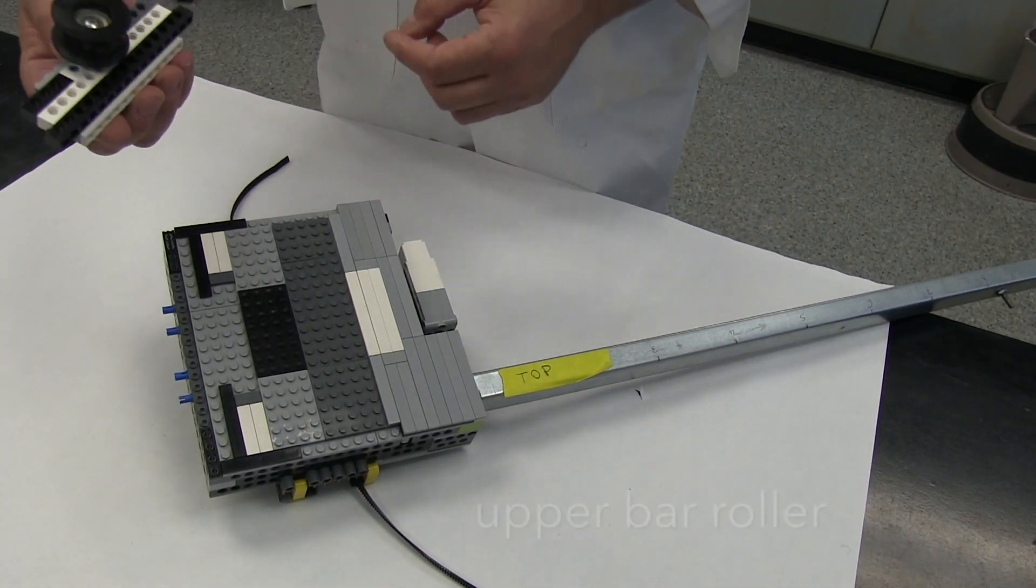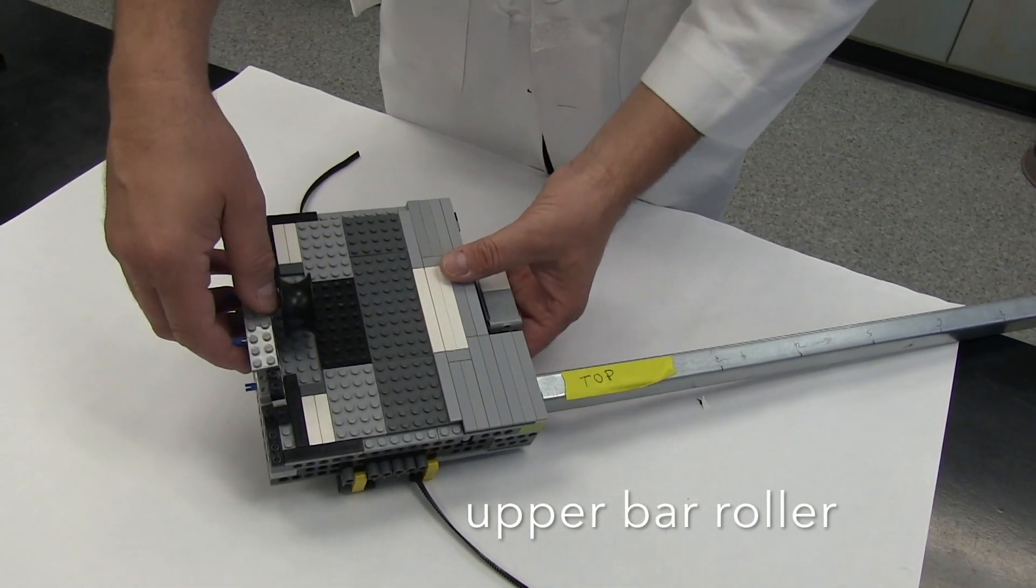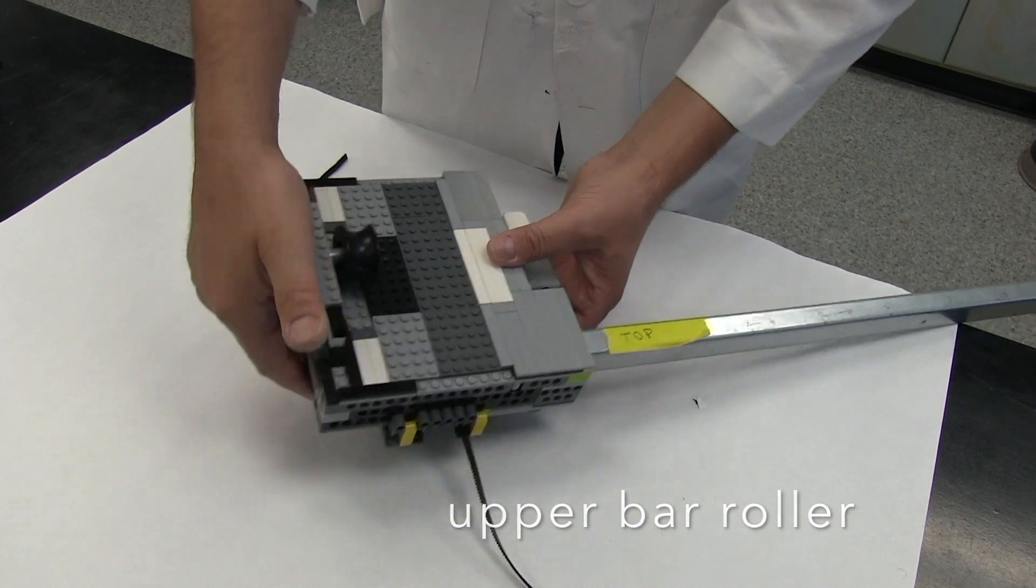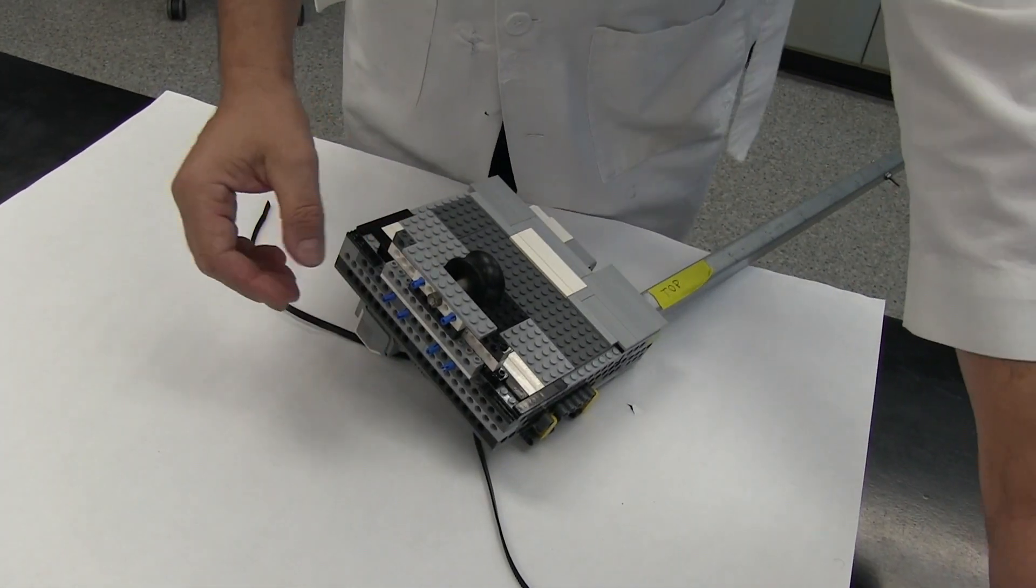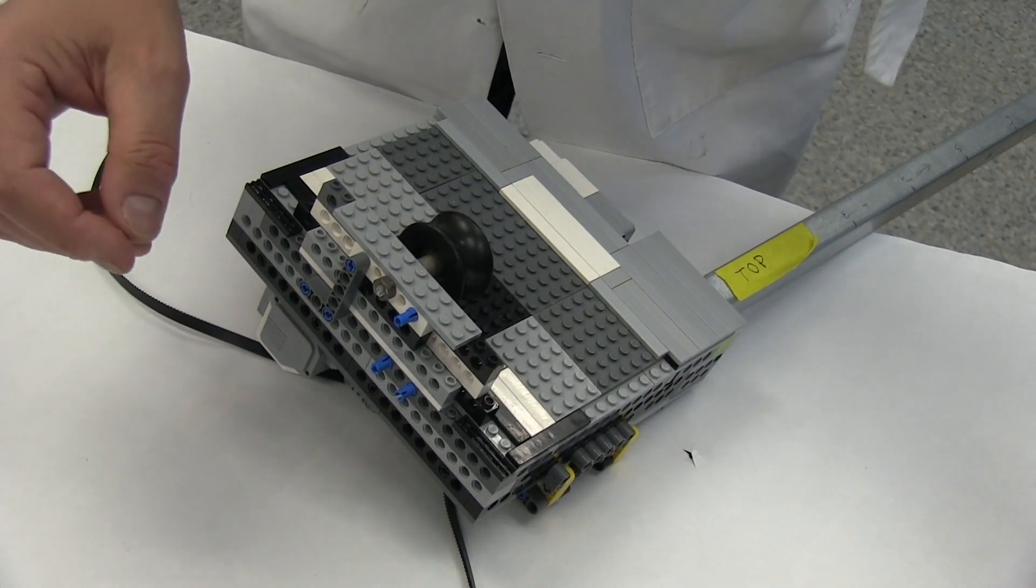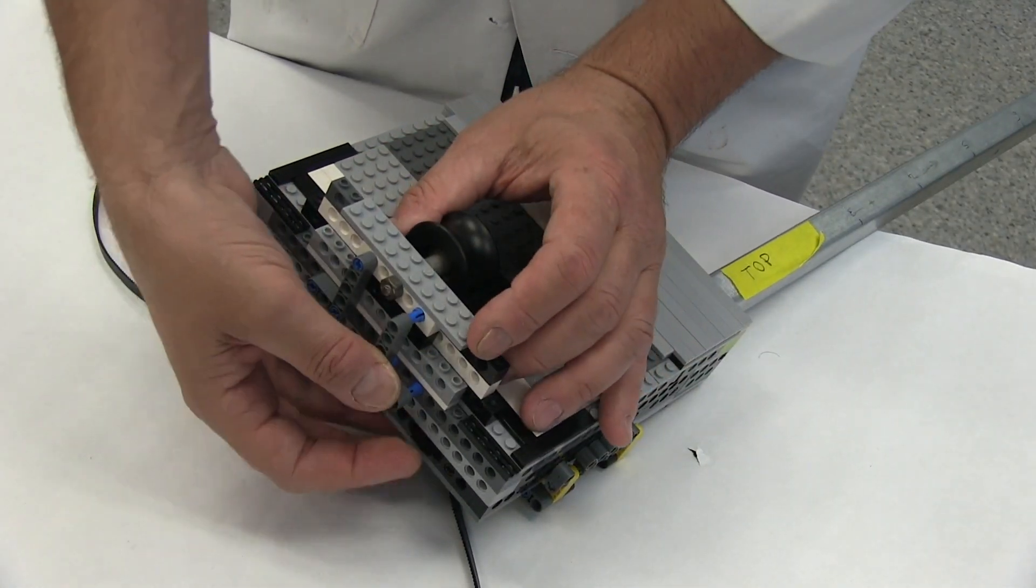In this next step, we will install the roller for the upper bar. This will enable smooth sliding motion of the robotic arm from left to right over the whole base of the fraction collector where the collecting bottles will be placed.